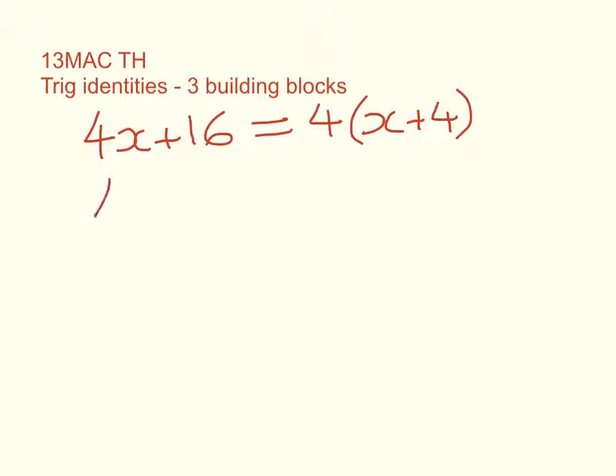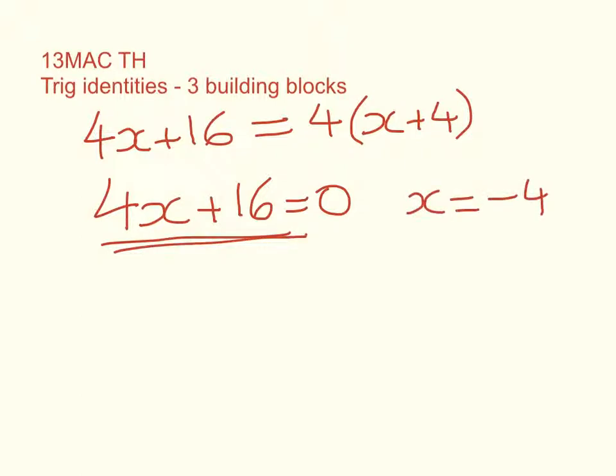For example, if I write 4x plus 16 is equal to 4 times x plus 4, that's an identity. It doesn't matter what x is, that statement will always be true. Now that's different from an equation, which is more like this: 4x plus 16 equals 0. The only solution to this is x equals negative 4, whereas this one, x is any real number.